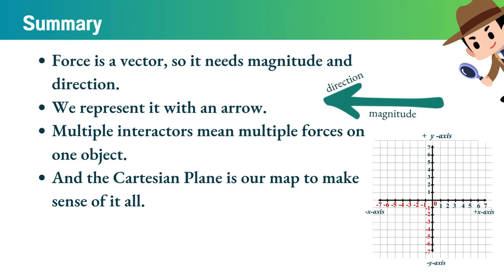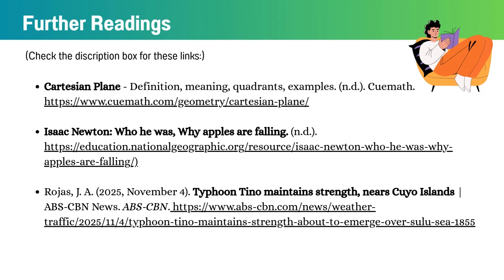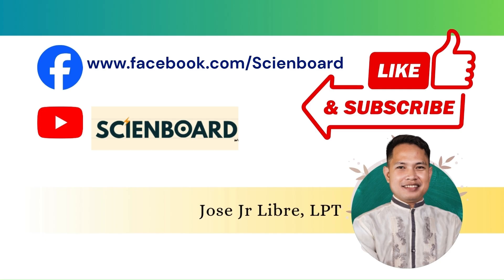Let's have a recap of what you learned from this video. First, force is a vector, so it needs magnitude and direction — we represent it with an arrow. Multiple interactors mean multiple forces on one object. And the Cartesian plane is our map to make sense of the forces. If you find this video helpful, don't forget to like and subscribe to our channel and follow us on Facebook. See you in the next part of our video tutorials. Take care.